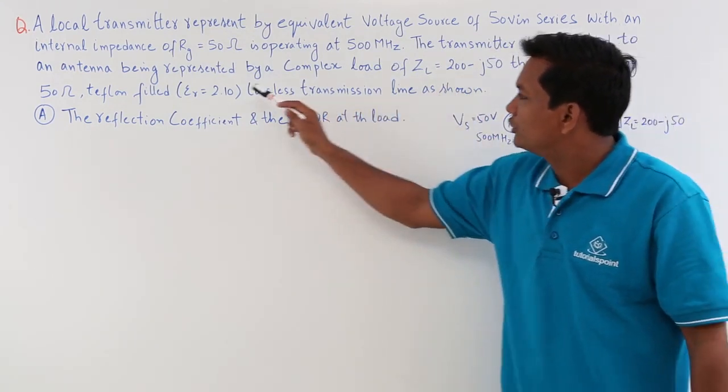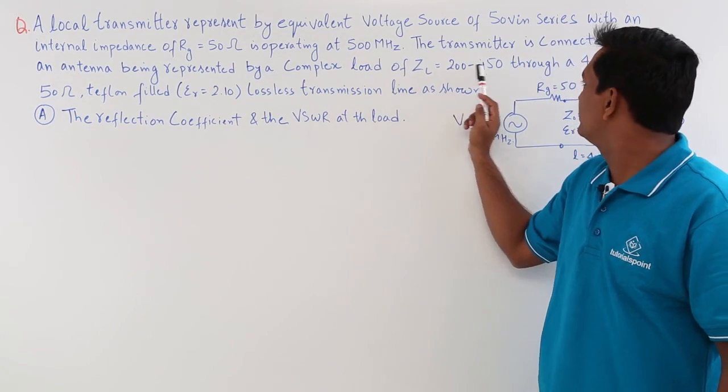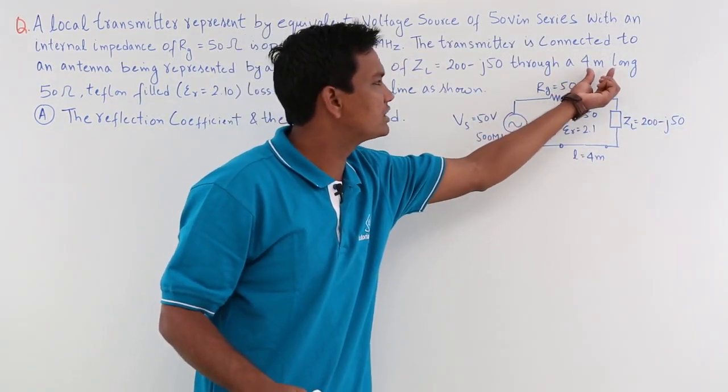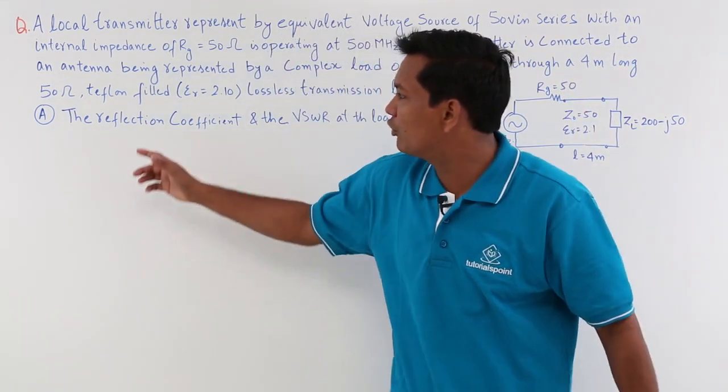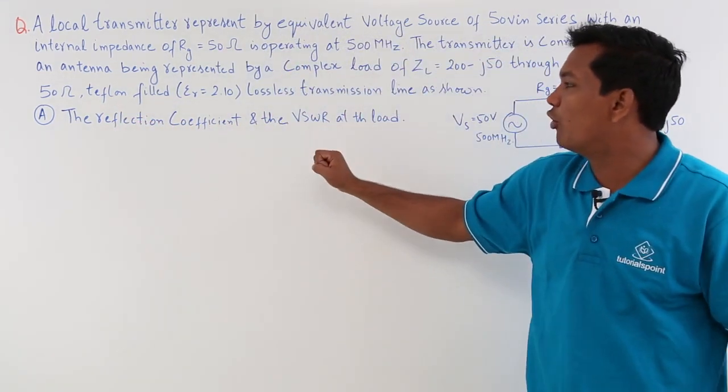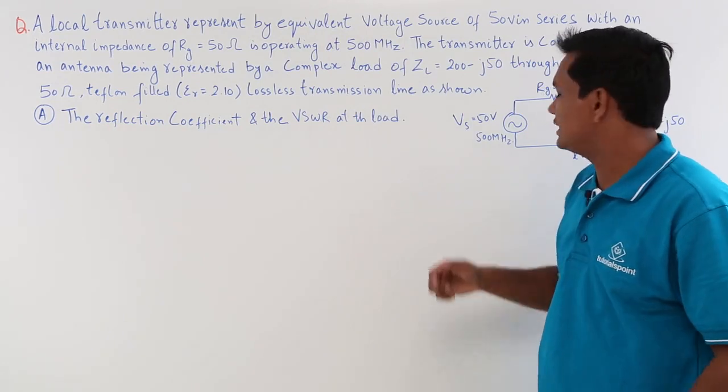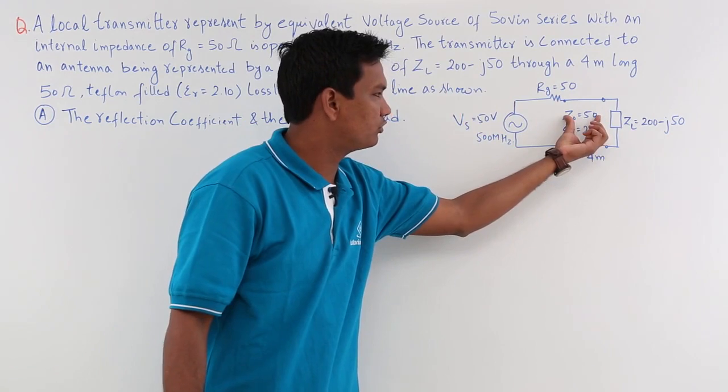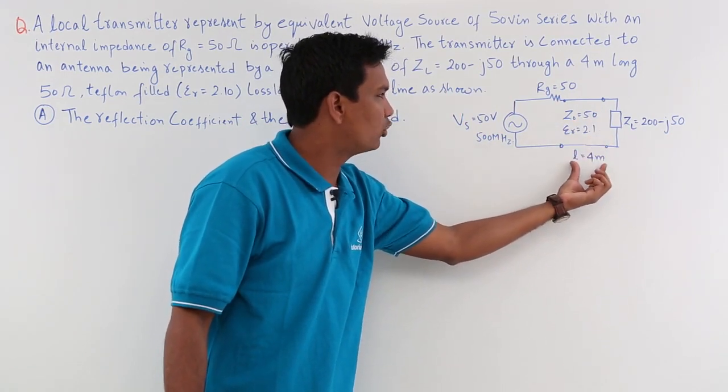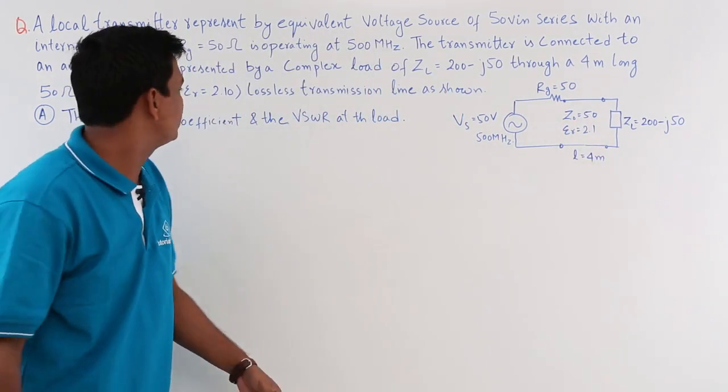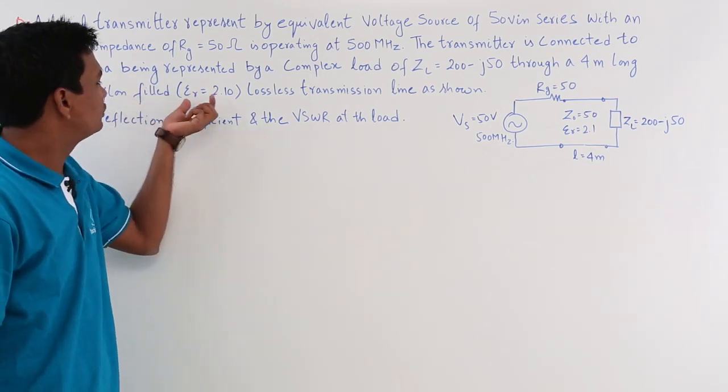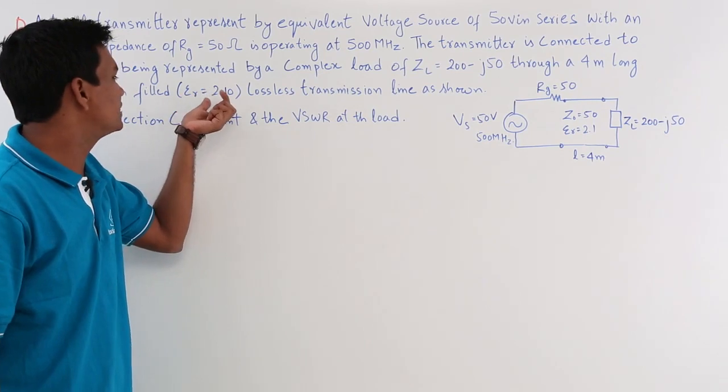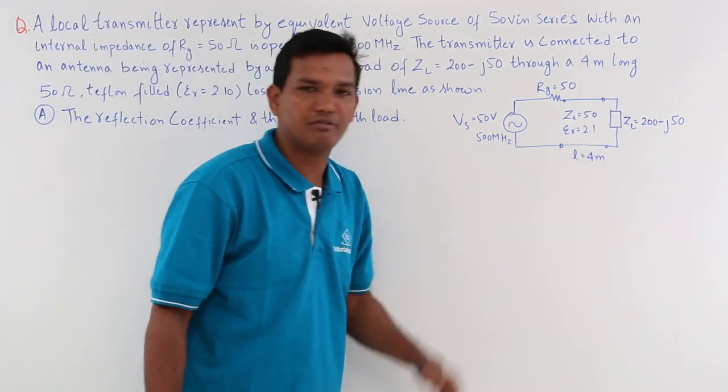The antenna represented by a complex load is connected through a 4 meter long line. It is a 4 meter long 50 ohm line. The characteristic impedance is given as Z0 equal to 50, length is 4 meters. It is also mentioned that it is Teflon filled, so the relative permittivity is given as 2.10, which you can see in the figure.